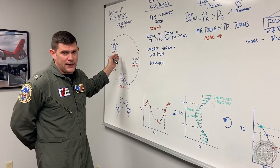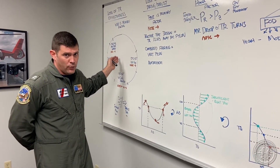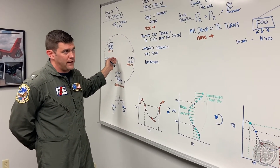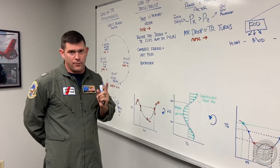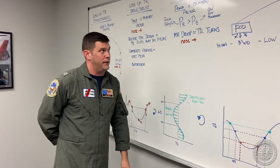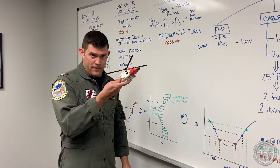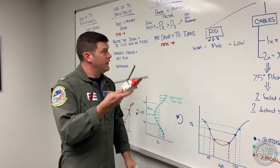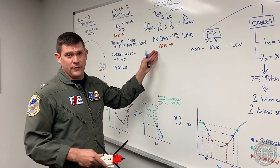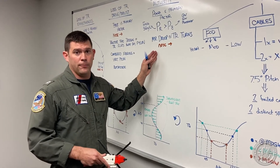That's not to say the H-60 is immune from tail rotor effectiveness issues, but it's important that the prudent pilot understands when you're flying big iron, you have to manage your power appropriately.